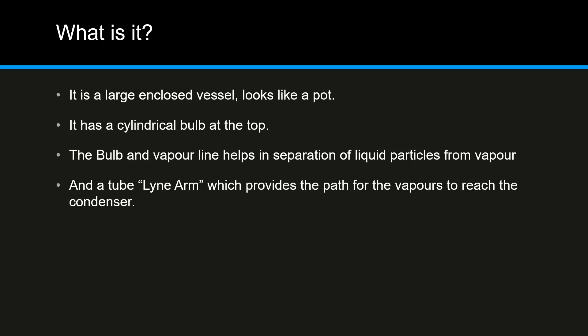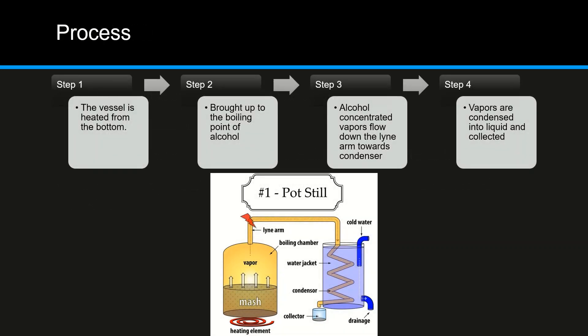The lyne arm provides the path for vapors to reach the condenser. When the vapor reaches the condenser, it condenses the liquid and it is collected in a pot. Step 1, as you can see in the diagram: the vessel is heated from the bottom and brought up to the boiling point of alcohol. The alcohol passes through the lyne arm and goes towards the condenser, which is filled with cold water so the pipes are chilled. The vapor then condenses into liquid and is collected in the collector.